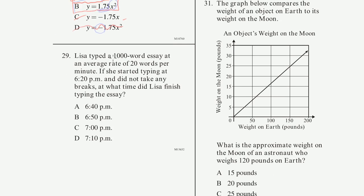Problem 29: Lisa typed a 1,000-word essay at an average rate of 20 words per minute. She started typing at 6:20 PM and did not take any breaks. At what time did she finish? She had 1,000 words at 20 words per minute — so how many minutes will it take?